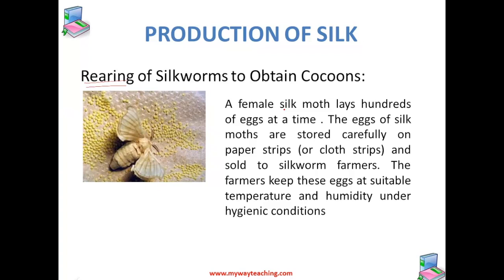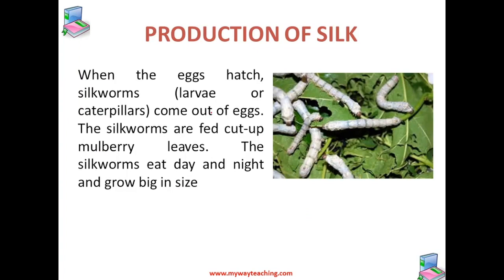A female silk moth lays hundreds of eggs at a time. The eggs of silk moth are stored carefully on paper strips or cloth strips and sold to the silkworm farmers. These farmers keep the eggs at suitable temperature and humidity under hygienic conditions.